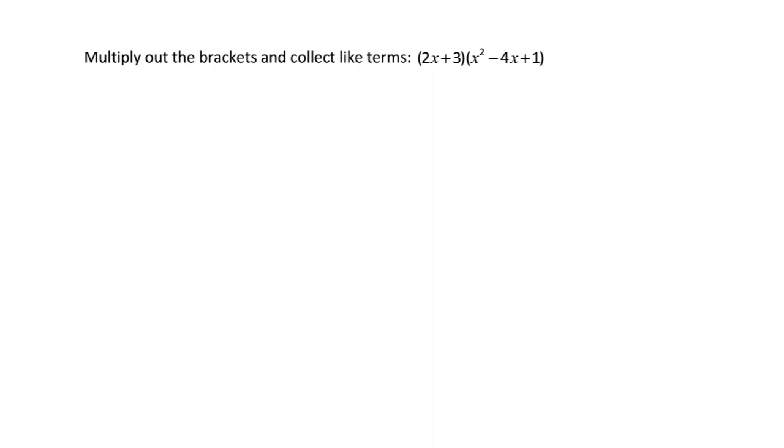Last up, we've got multiply out the brackets and collect like terms. So we've got 2x plus 3, and then x squared subtract 4x plus 1. Sometimes when we see pairs of brackets, we would use FOIL, which of course stands for first, outside, inside, and last. We can't use FOIL for this particular question because the second bracket has got three different terms.